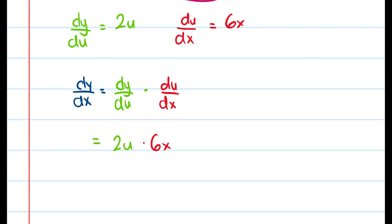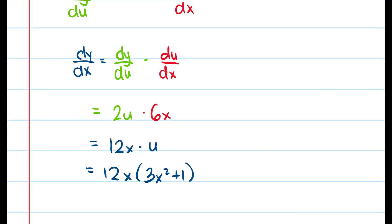So if I write my answer out I get 12x times u but remember that u was equal to 3x squared plus 1. So then my final answer is just 12x times 3x squared plus 1.